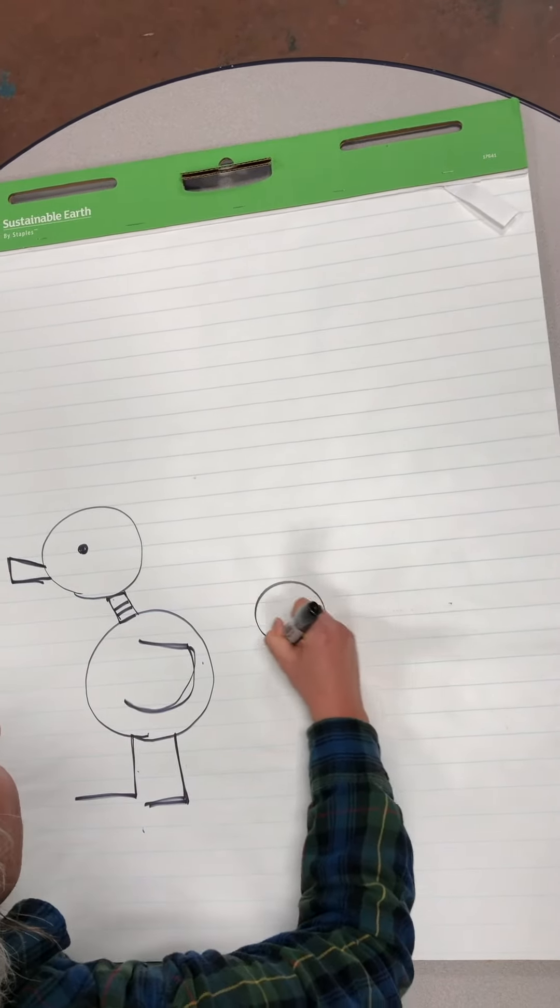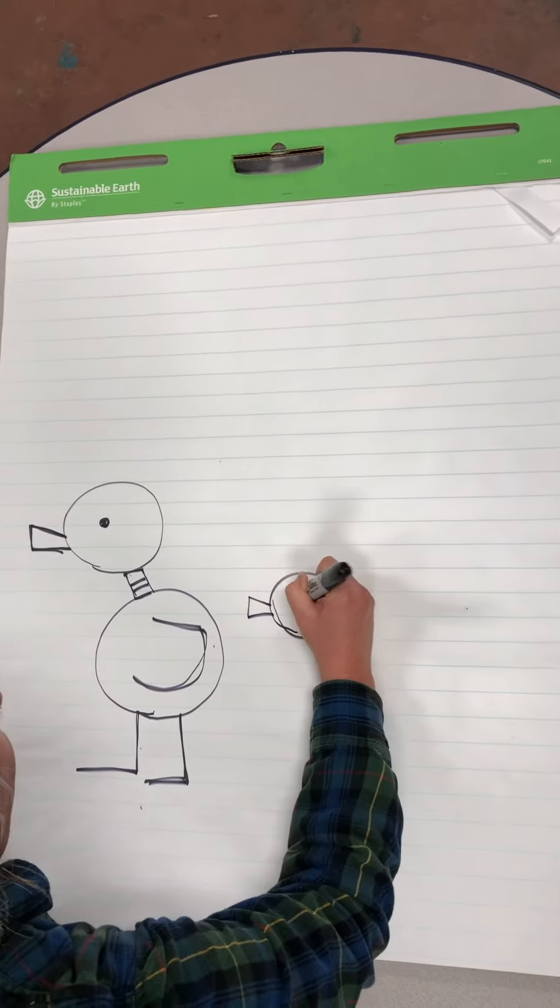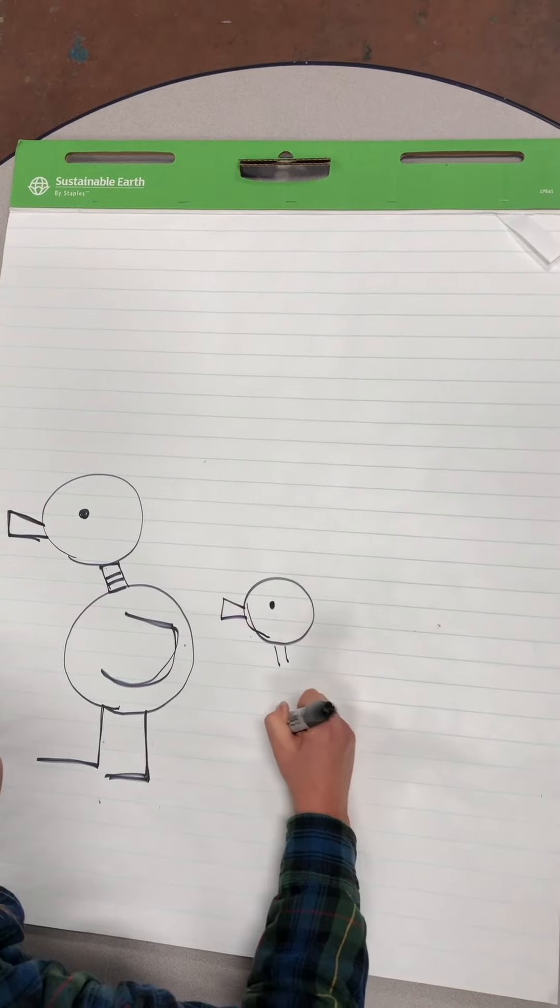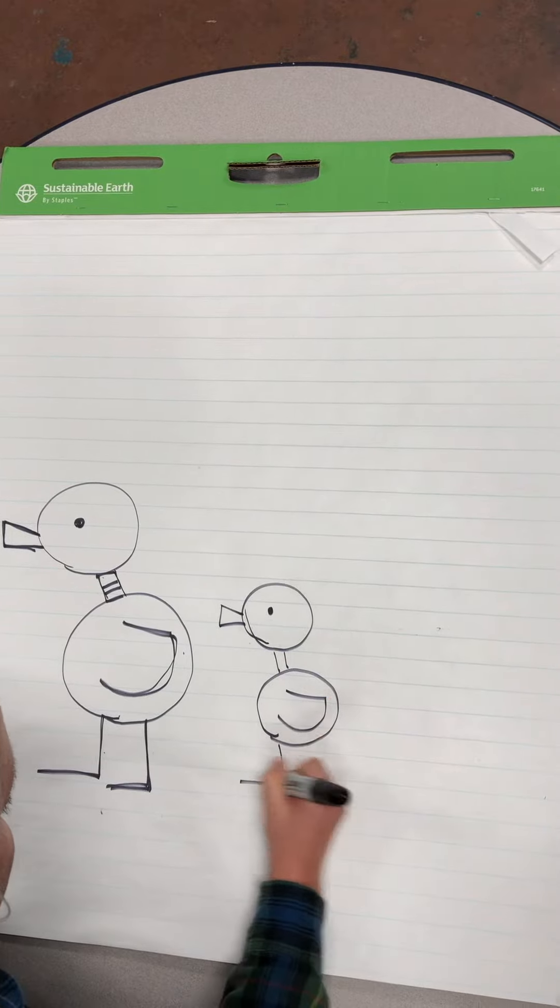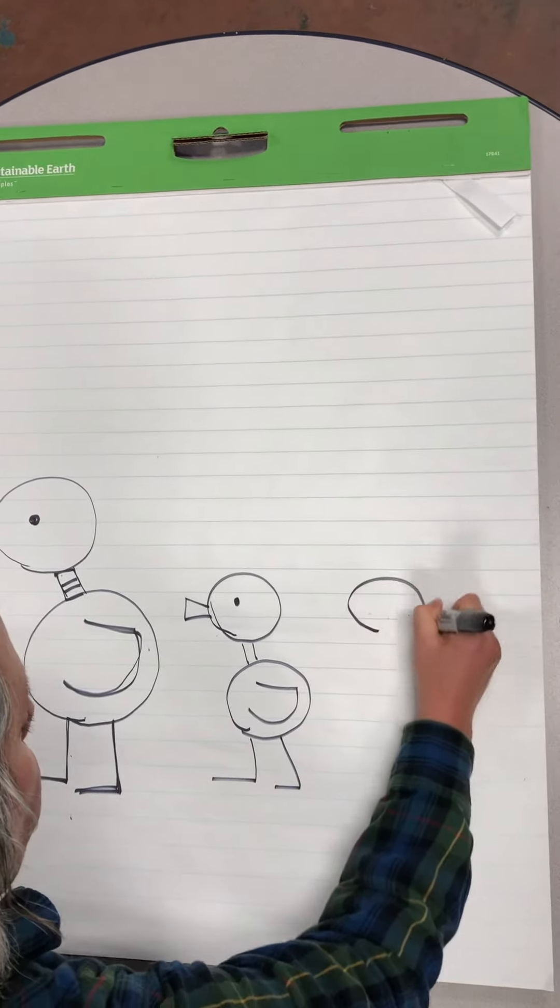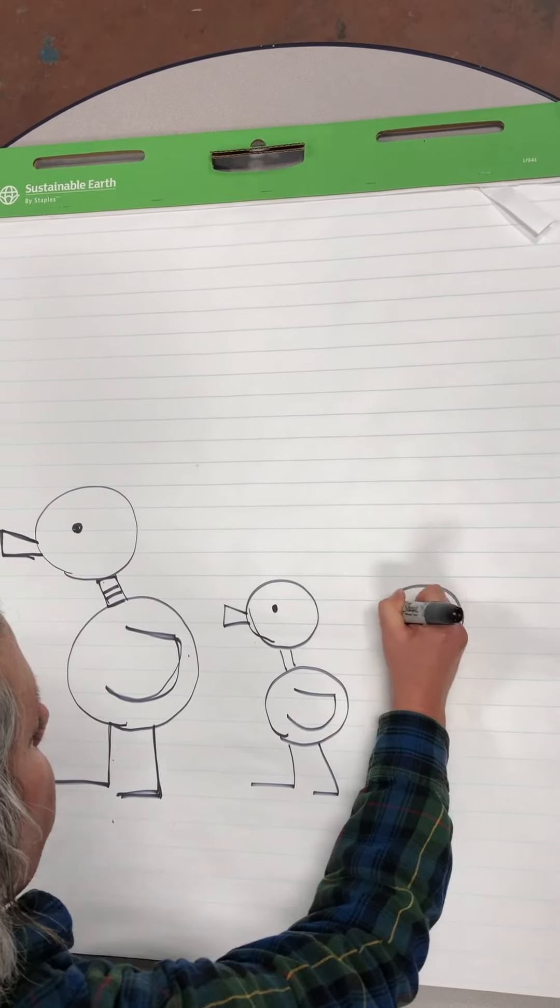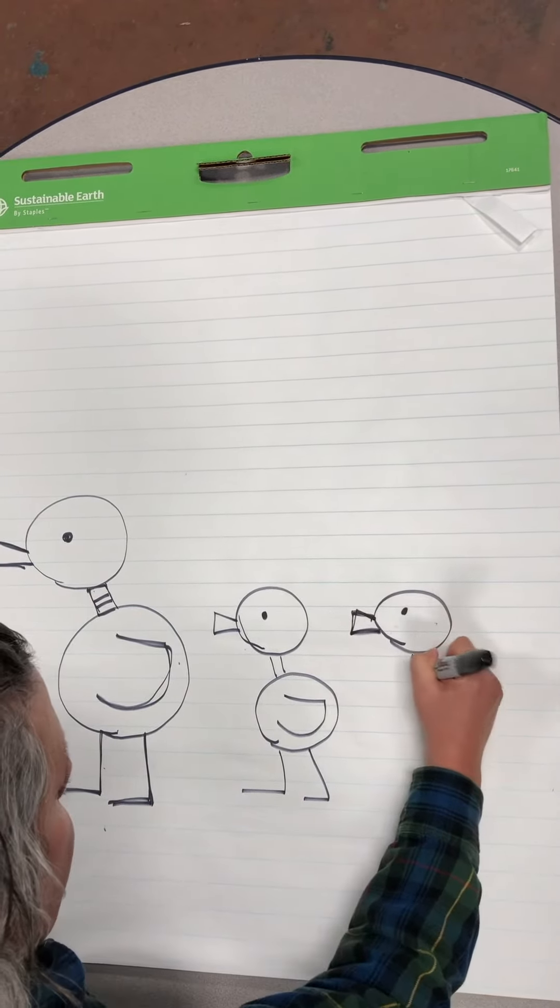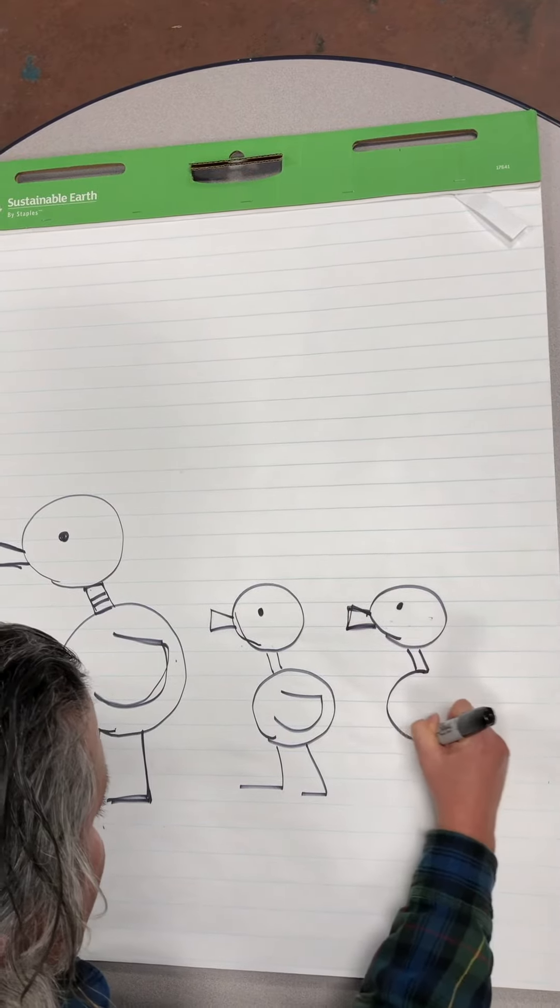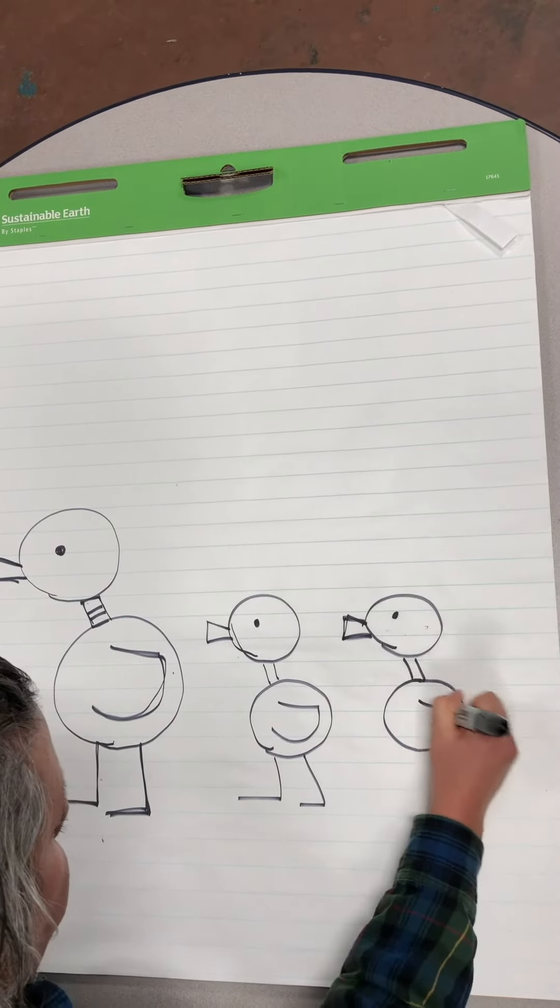Then you just repeat this entire process again. It's going to be a lot quicker the second time because you're just creating it smaller. You're creating the ducklings. Got the L's again. Here's another circle, small circle, dot for the eye, the wedge. Or you can just do a straight up rectangle and then the other circle for the body.